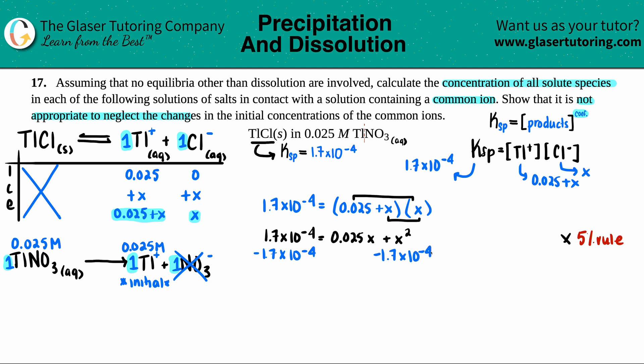I'm going to rearrange my equation so this equals zero. I'll write the x² first: x² + 0.025x - 1.7×10⁻⁴. Let's get rid of this middle guy.